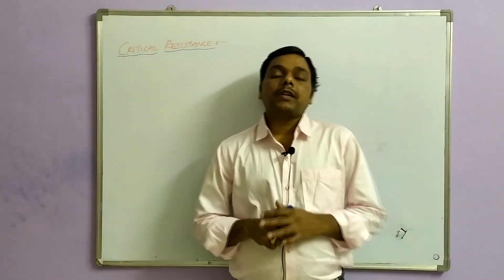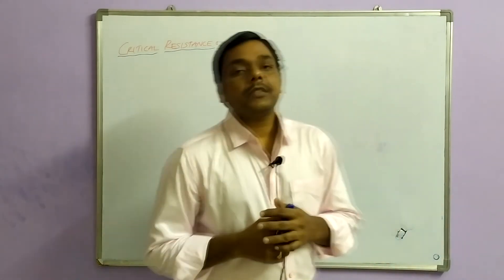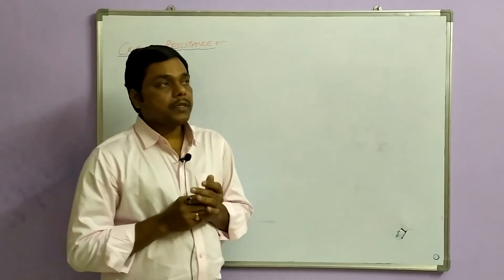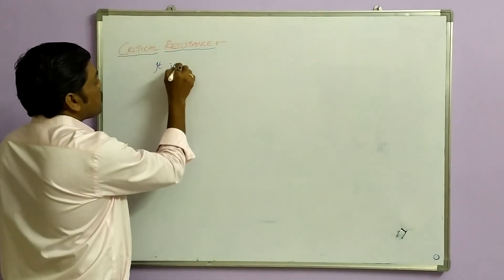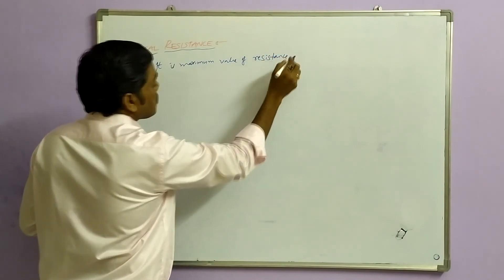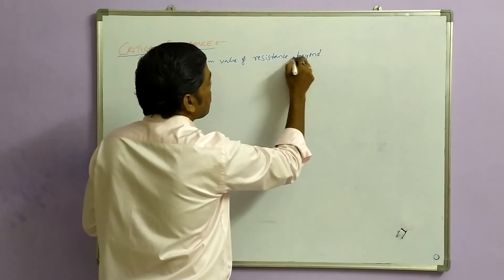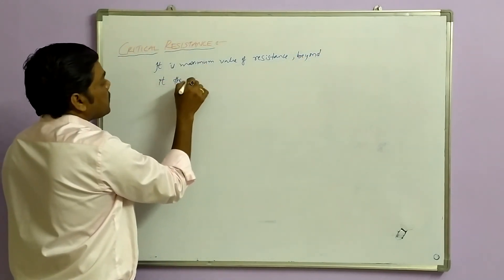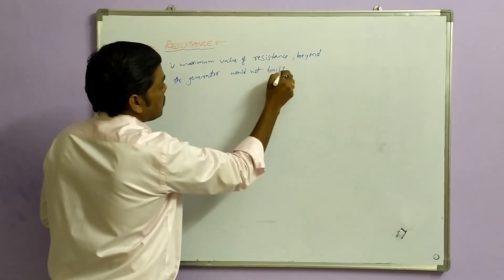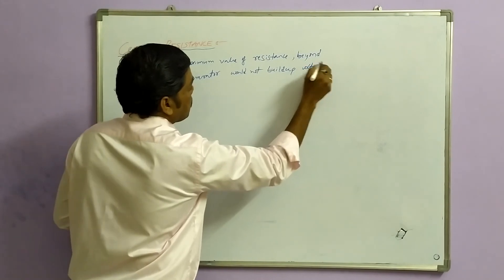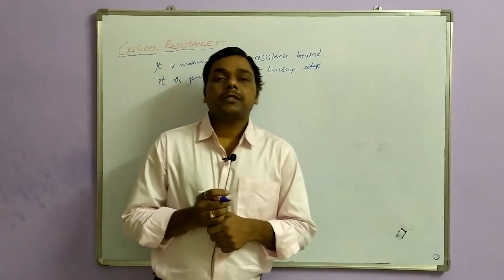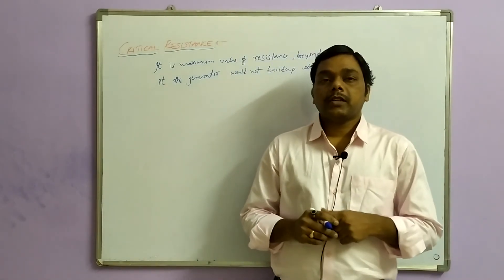Now we will discuss critical field resistance. Critical resistance is the resistance beyond which the generator will not build up any voltage — it is the maximum value of resistance. Beyond this resistance, the generator will not build up voltage. This is especially important in DC shunt generators.